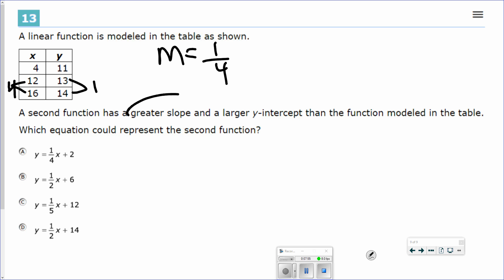I'm looking for greater slope than 1 fourth. So the letter A is out because it's the same. I'm looking for greater. 1 half is greater, so that one's still in play. 1 fifth is not greater than 1 fourth, so that one's out. And the last one has 1 half, so that one's greater.